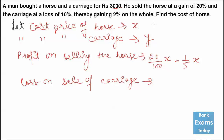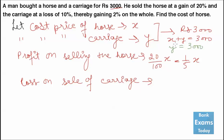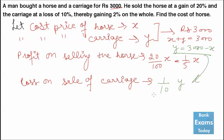The cost price of horse and carriage is given as rupees 3000, so X plus Y equals 3000. Therefore the value of Y equals 3000 minus X. Now the loss on the carriage is 10% of the cost of the carriage, which is 1/10 of Y. Substituting the value of Y, it is 1/10 of (3000 minus X).